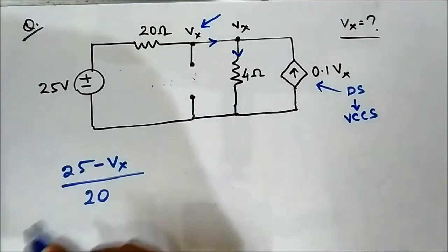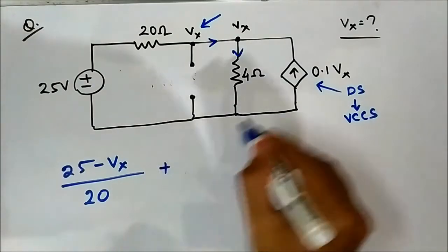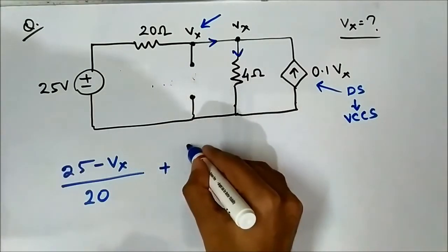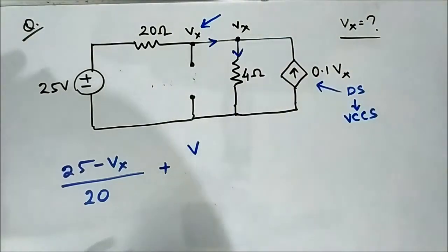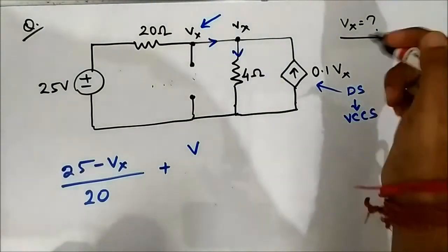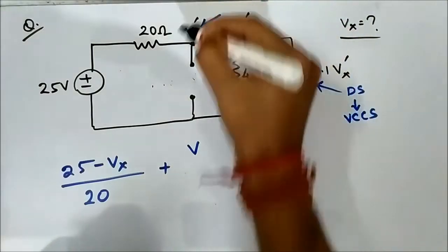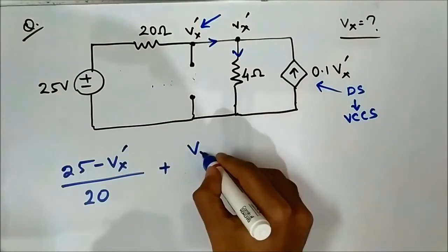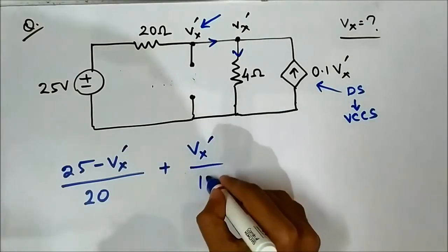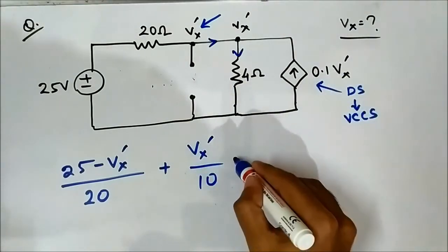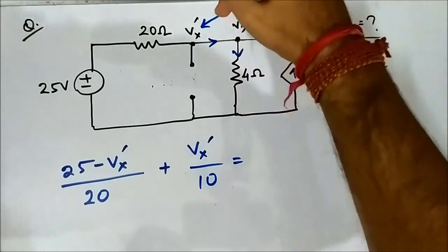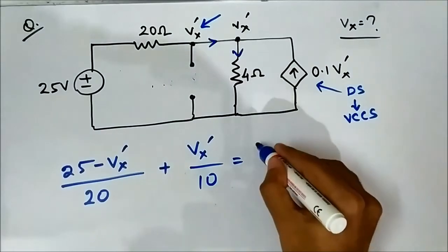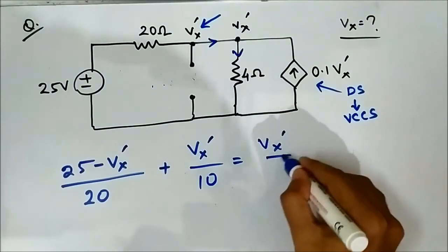...plus the current source value 0.1 Vx', written as Vx'/10, this is the first step so we call it Vx'. The nodal equation is: (25 minus Vx')/20 plus Vx'/10 equals Vx'/4. These two currents are moving towards the node, and Vx'/4 is moving away.